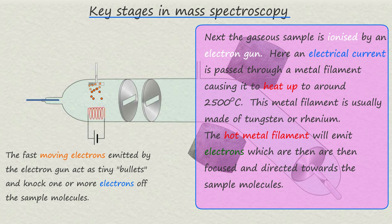You can think of these electrons as tiny bullets or billiard balls and they are able to knock out one or more of the electrons from the gaseous sample to form positively charged ions.